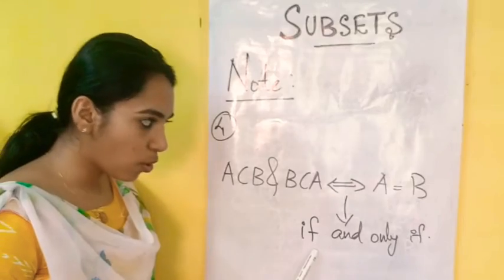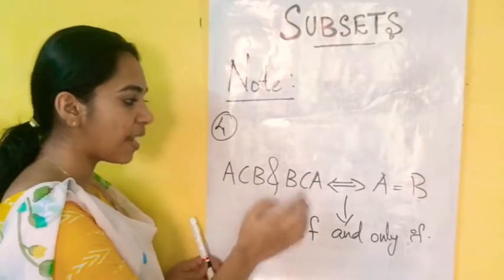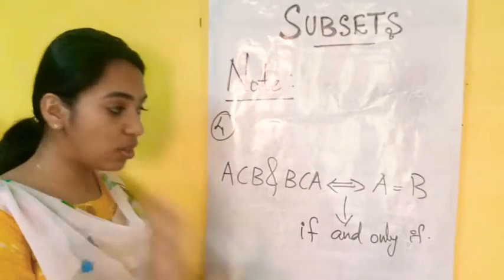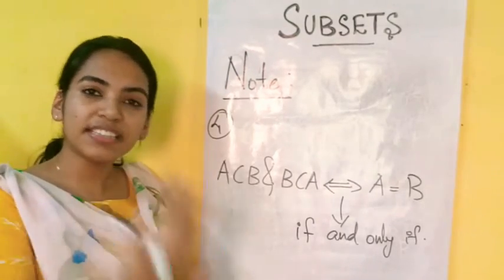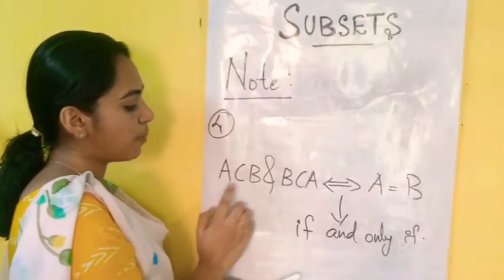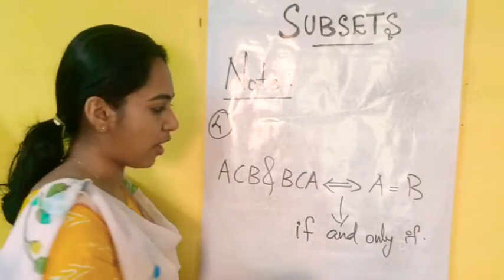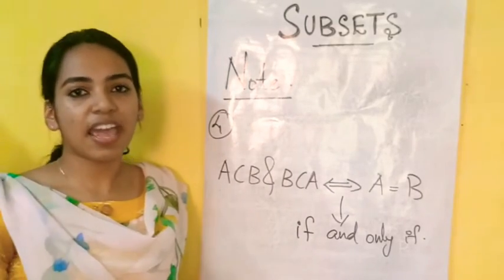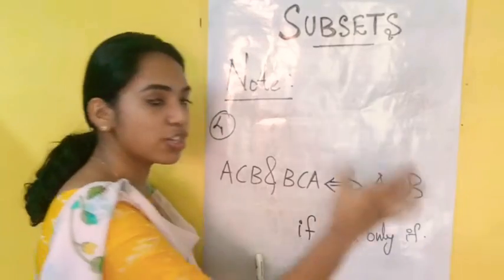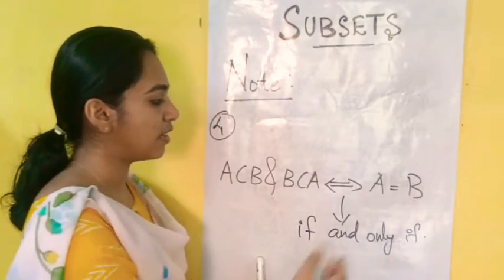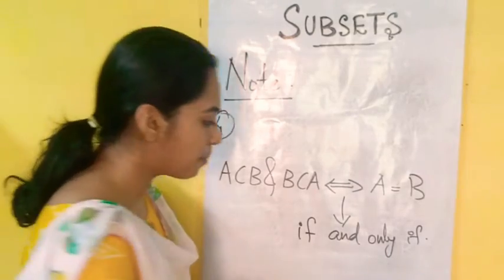B subset of A and A subset of B, if and only if A is equal to B. This is the first condition. A equals B is a subset relationship that holds only when A is a subset of B and B is a subset of A. This is a two-way implication — if and only if.